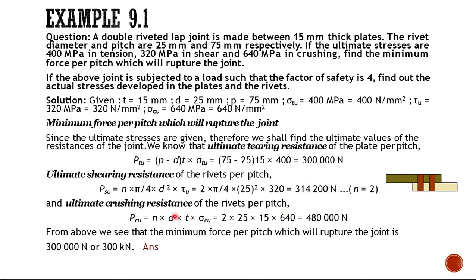The ultimate crushing resistance formula is n × d × t × sigma_cu. With n = 2: 2 × 25 × 15 × 640 = 480,000 N, or 480 kN. The minimum of the three values — 300 kN, 314 kN, and 480 kN — is 300 kN. So the minimum force per pitch which will rupture the joint is 300 kN, and we design the rivet for this value.